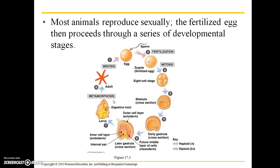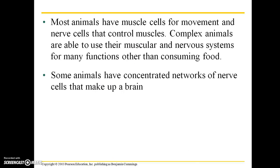Butterflies and moths and most other insects are another example of animals that have complete metamorphosis. Of course, mammals do not undergo a metamorphosis — we are born and basically look very similar to what we will as adults, going through a slow process of growth and sexual maturation. Most animals have muscle cells for movement as well as nerve cells that control muscles. Complex animals are able to use their muscular and nervous systems for many functions other than consuming food, and some animals have concentrated networks of nerve cells that make up a brain.